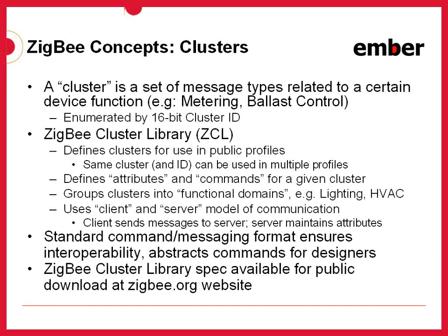Each cluster has a set of attributes, which are the properties maintained on the device responsible for those things, and a set of commands, which are the sorts of things it sends and receives. The Zigbee Cluster Library also groups these clusters by what it calls functional domains — clusters that are related, like color control, ballast control, and lighting, might go into a lighting functional domain, while things like humidity, pressure sensing, and valve control might go into an HVAC functional domain.